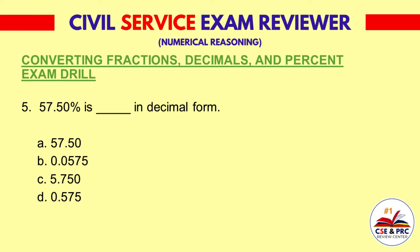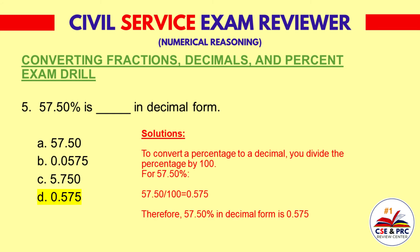5. 57.5% is blank in decimal form. a) 57.50, b) 0.0575, c) 5.750, d) 0.575. The answer is D, 0.575. Solutions: To convert a percentage to a decimal, you divide the percentage by 100. For 57.5%, 57.50 divided by 100 equals 0.575. Therefore, 57.5% in decimal form is 0.575.